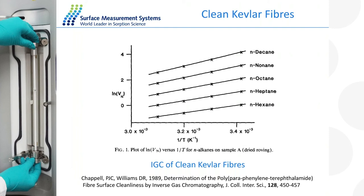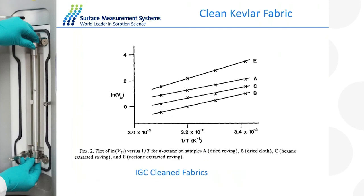Looking at a series of alkanes at different temperatures for a dried sample of Kevlar, the linear plots for all these probe molecules indicate there is no Tg in this temperature range — only about 20 to 50 degrees. We can measure the heat of adsorption in this range, but there's no Tg present. Looking at a range of clean fibres, including four different fabrics — some dried, some cleaned — in this temperature range the materials showed no Tg. That was useful information for the clean materials.